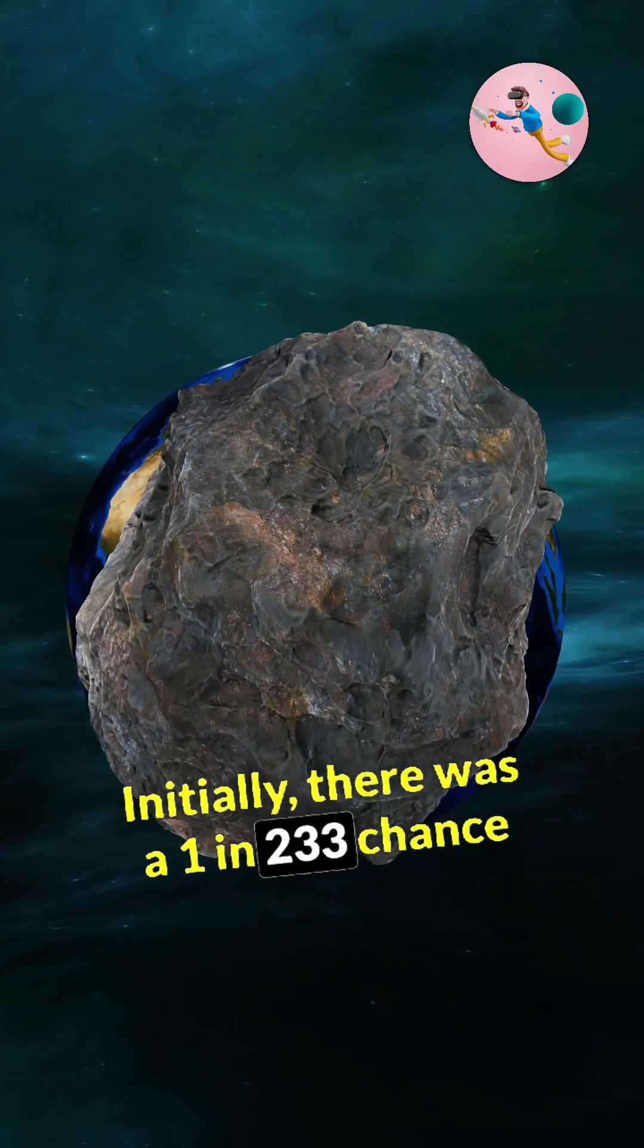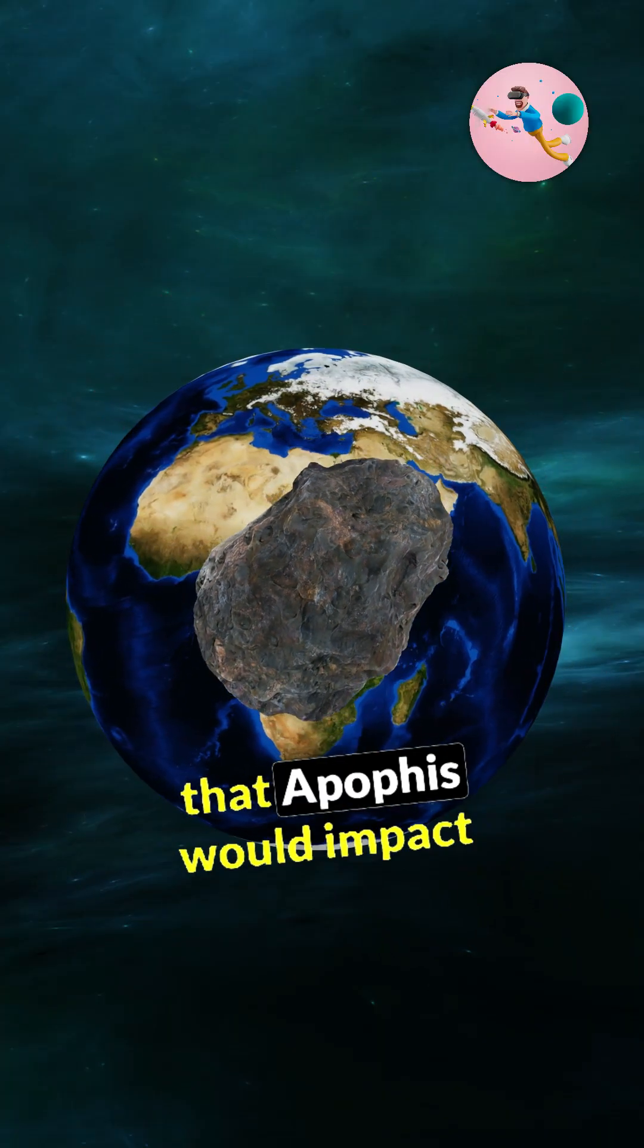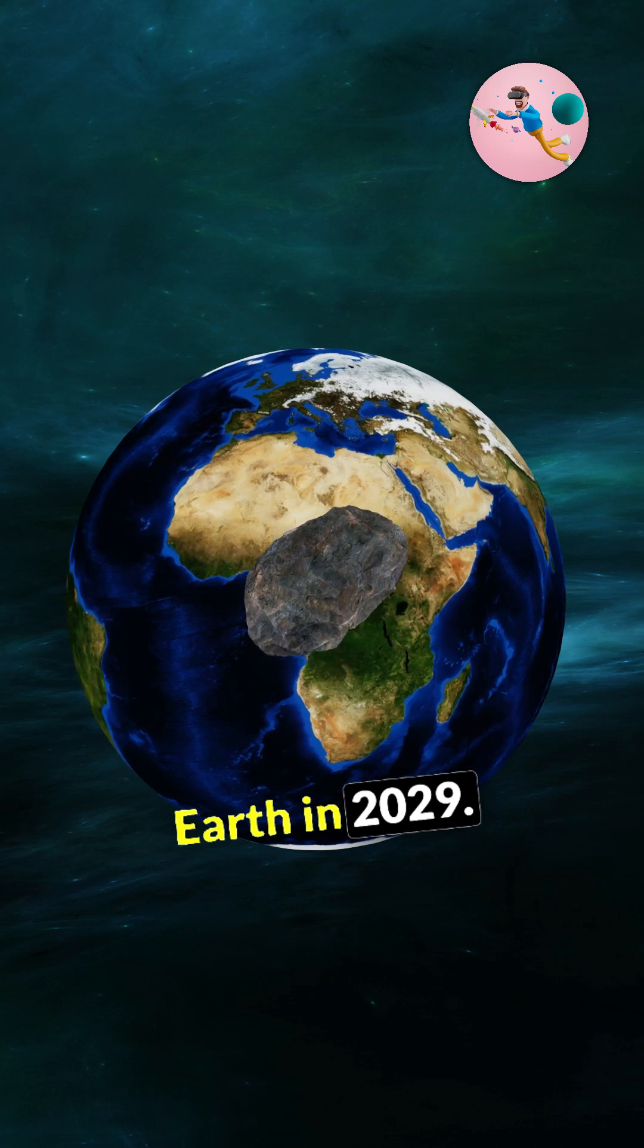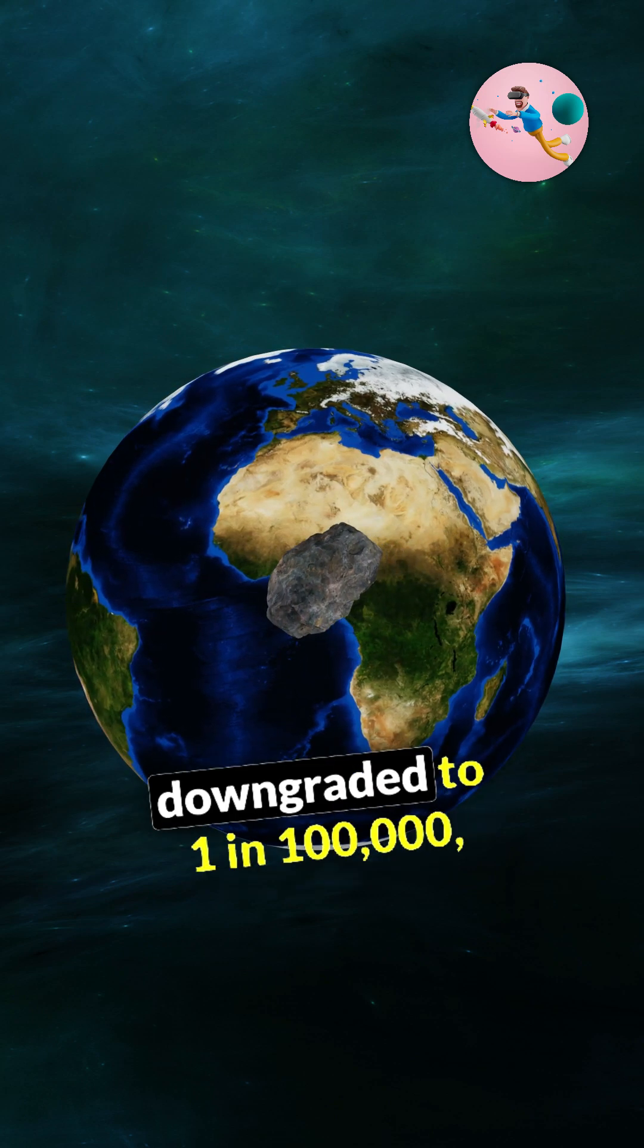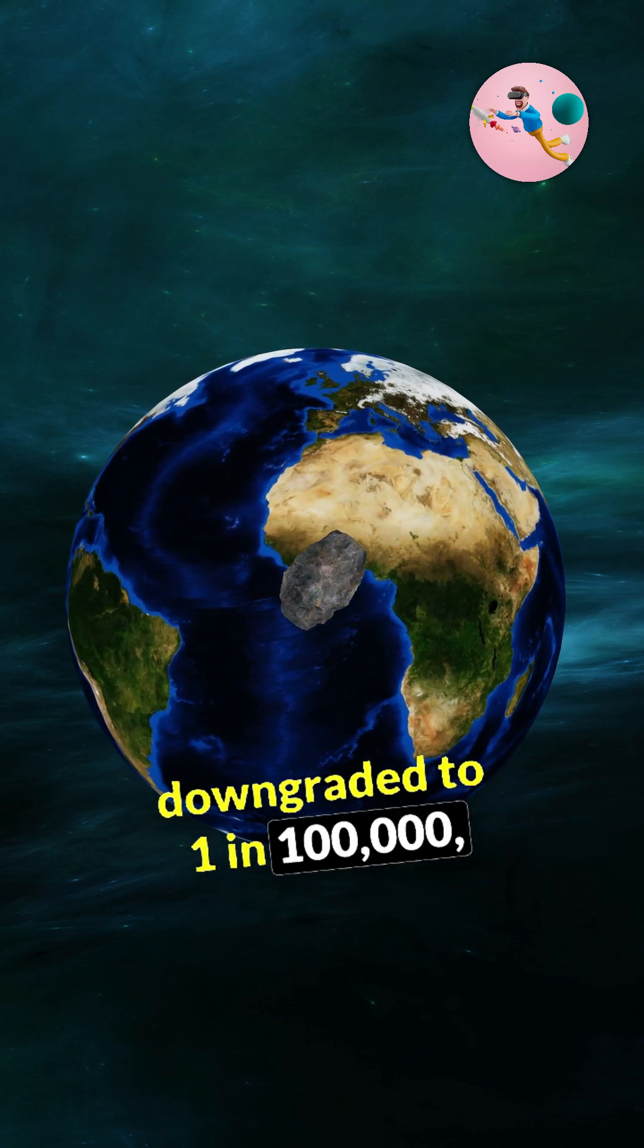Initially, there was a 1 in 233 chance that Apophis would impact Earth in 2029. This probability was later downgraded to 1 in 100,000, and then to zero.